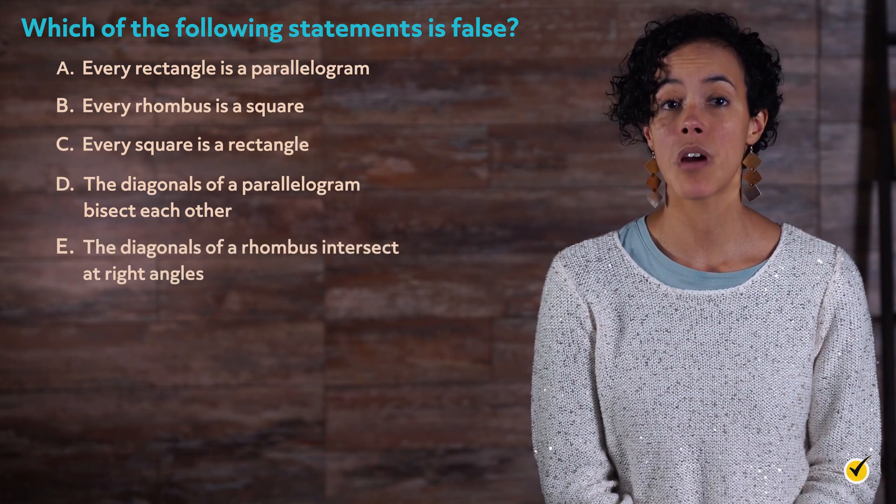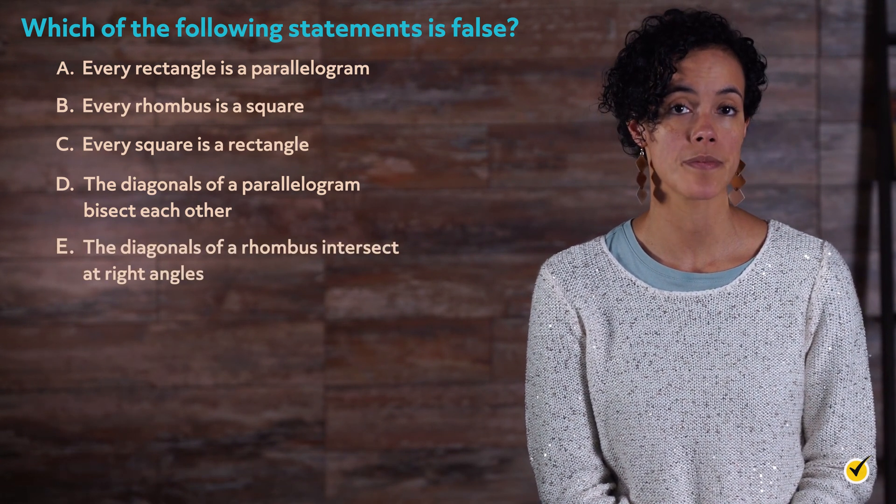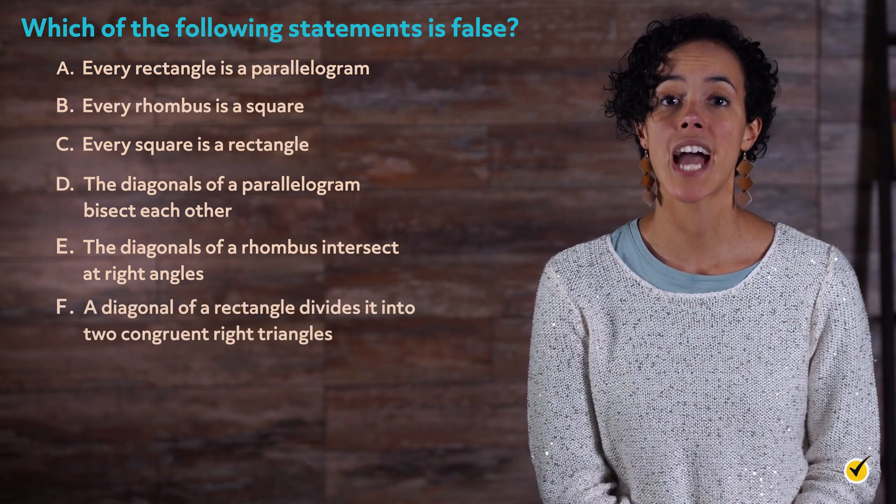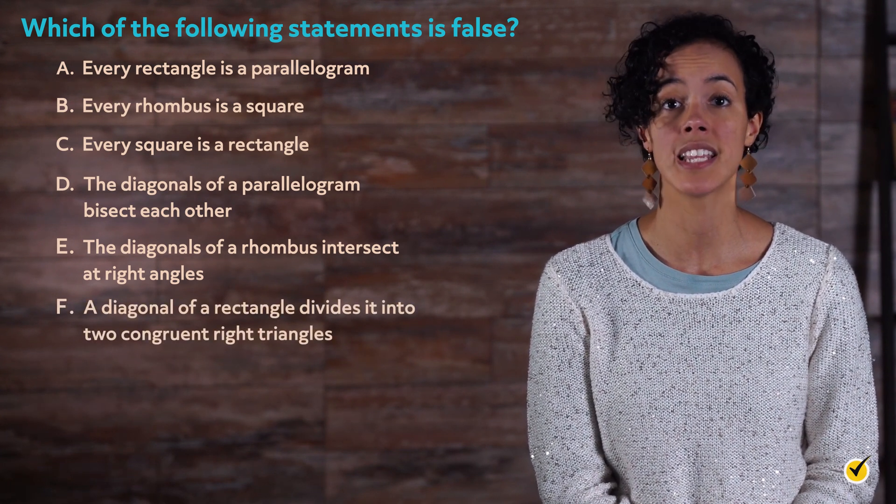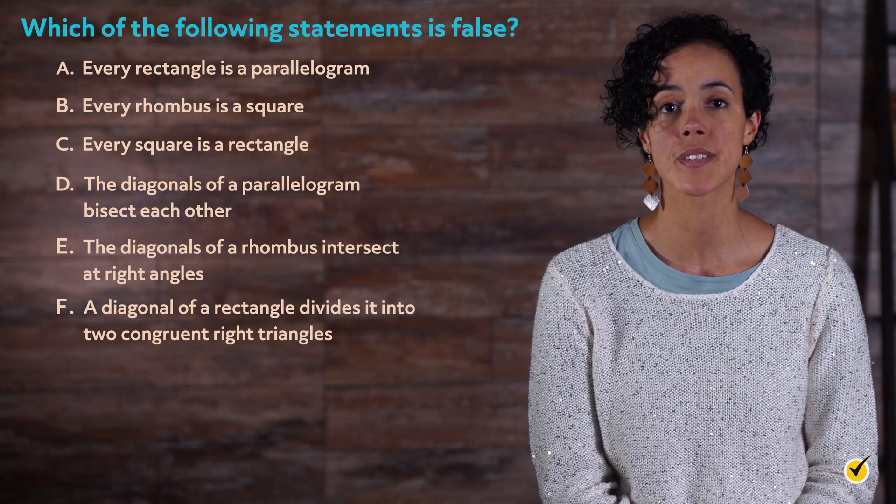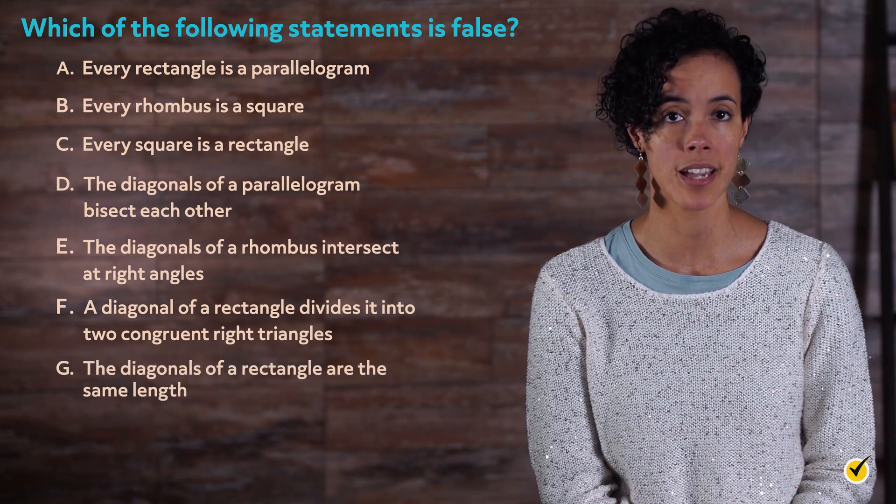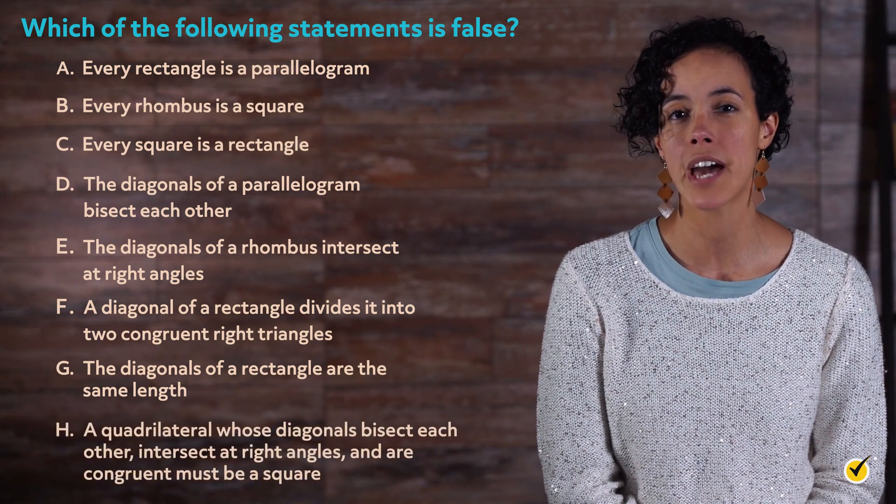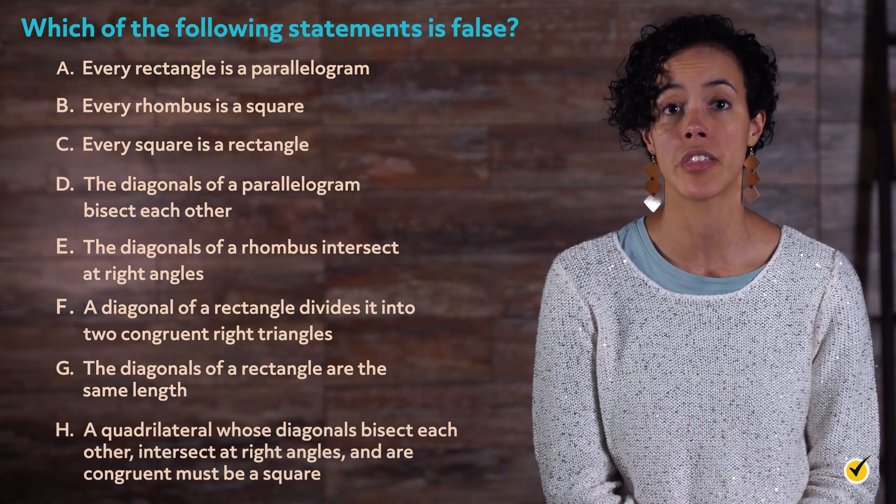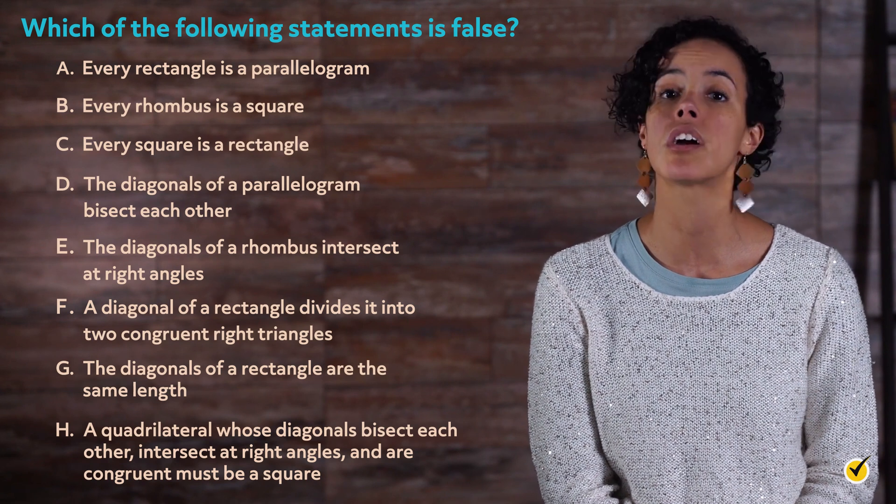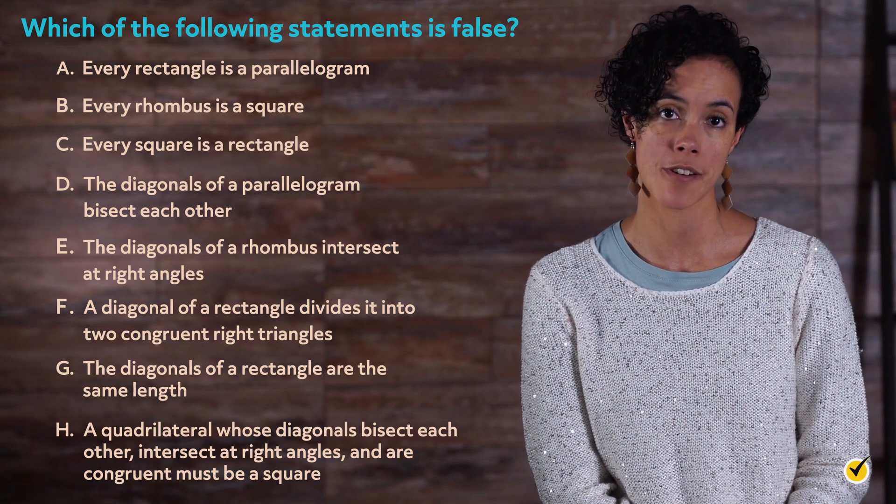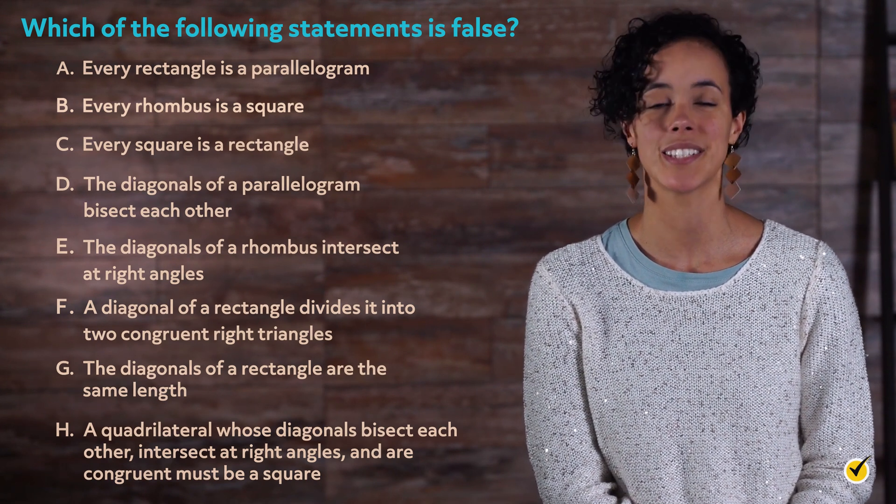E. The diagonals of a rhombus intersect at right angles. F. A diagonal of a rectangle divides it into two congruent right triangles. G. The diagonals of a rectangle are the same length. H. A quadrilateral whose diagonals bisect each other, intersect at right angles, and are congruent must be a square. The correct answer is B.